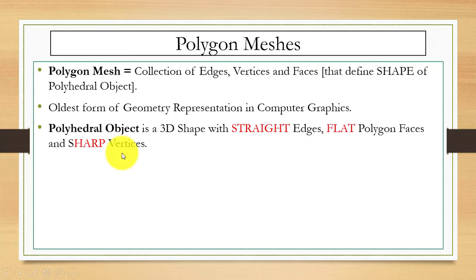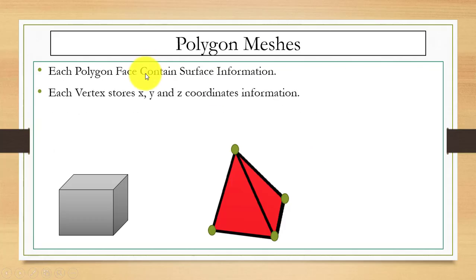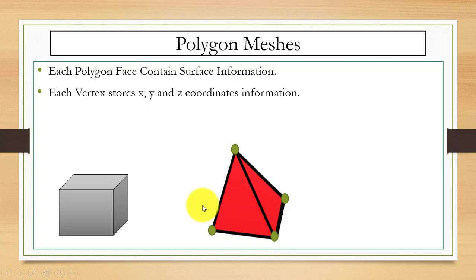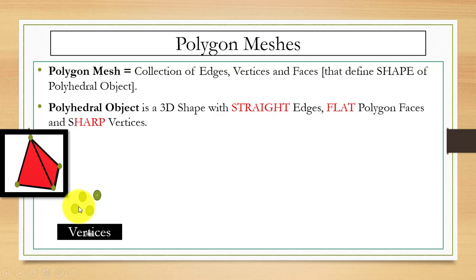A polyhedral object is a 3D shape with straight edges, flat faces, and sharp vertices. Polygon mesh is the oldest form of geometry representation in computer graphics. Each polygon face contains surface information, and each vertex stores X, Y, and Z coordinates, since this is a 3D object — unlike 2D where we only deal with X and Y coordinates.